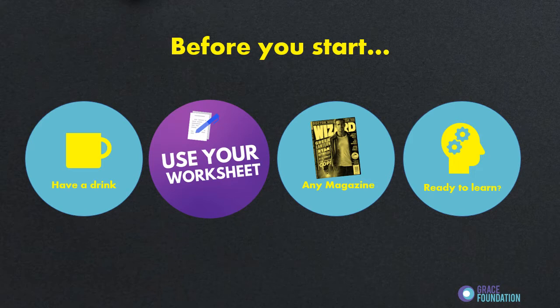Before we crack on with learning, here's a few things that you need to do. Make sure you get a drink so you're ready to learn. You're going to need that worksheet again, and a pen and maybe some paper as well. This one's a little bit different - we want you to select any magazine. It doesn't matter what the topic is because you've only been looking at the design, not the content. And above all else, set aside your social media, close all the different tabs on your computer and let's jump right in.